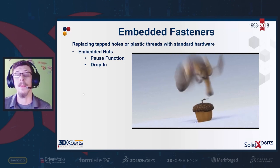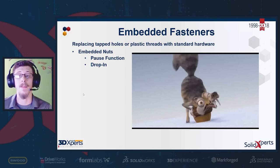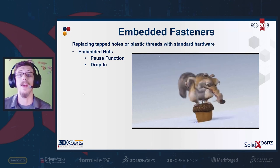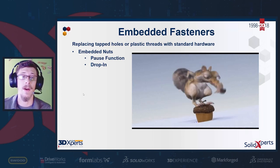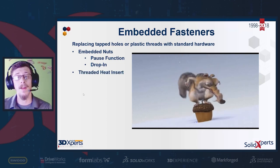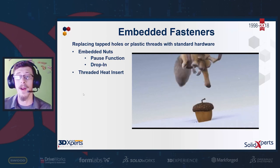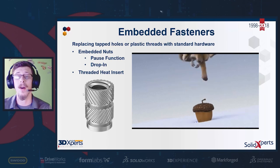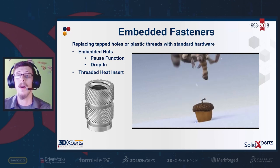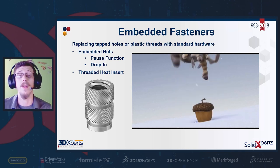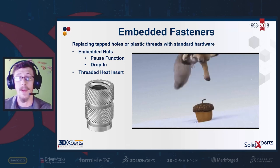There are two styles of embedding hardware. The first uses the pause function in your 3D printer's slicing software to pause the print, drop in hardware like a magnet, RFID chip, or specific nuts, then resume. The second is a drop-in method after the print is complete. You can also use threaded heat inserts found on McMaster-Carr and other suppliers — specifically ones meant for plastic molded or 3D printing applications.